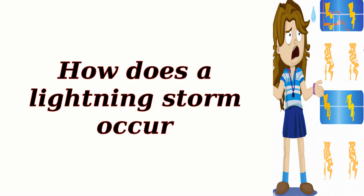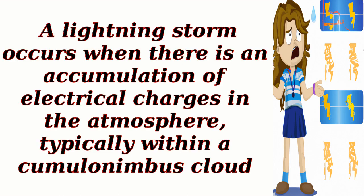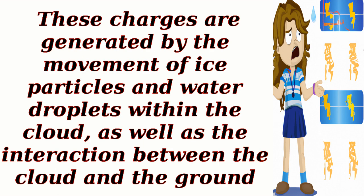How does a lightning storm occur? A lightning storm occurs when there is an accumulation of electrical charges in the atmosphere, typically within a cumulonimbus cloud. These charges are generated by the movement of ice particles and water droplets within the cloud, as well as the interaction between the cloud and the ground.